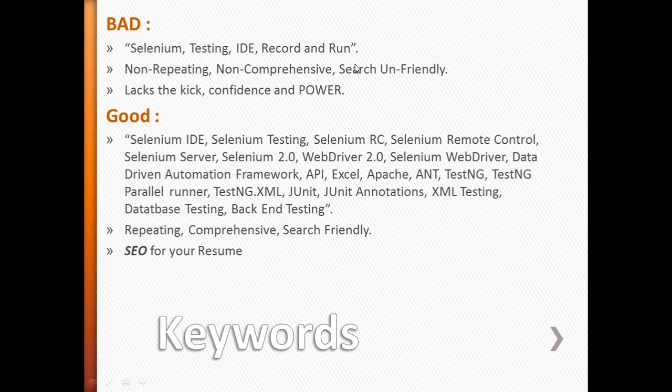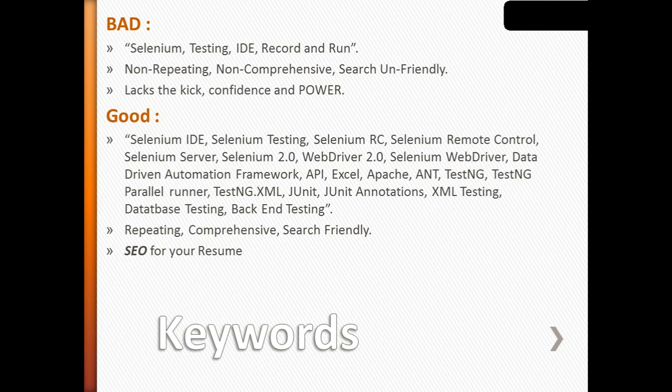The first section is keywords. Keywords are basically how a recruiter searches for your resume among thousands on a job portal like Monster, Dice, or CareerBuilder. They search for terms like 'QTP descriptive programming framework' — those are the keywords. The people who come up first are those who have recently updated their resumes with lots of relevant keywords.